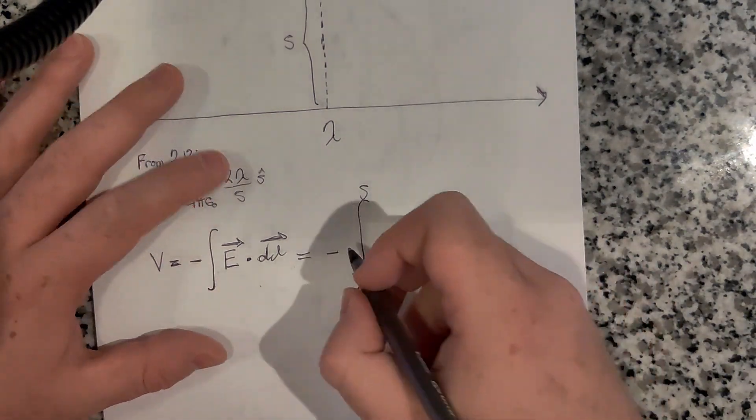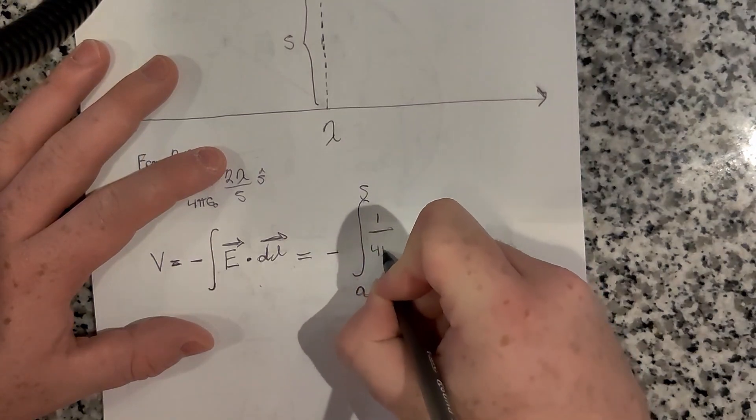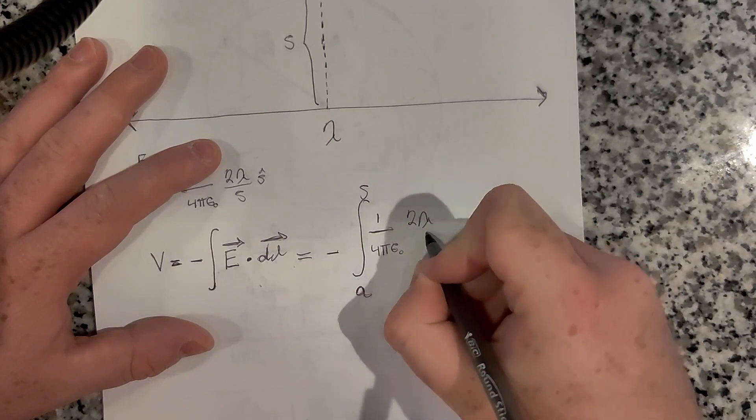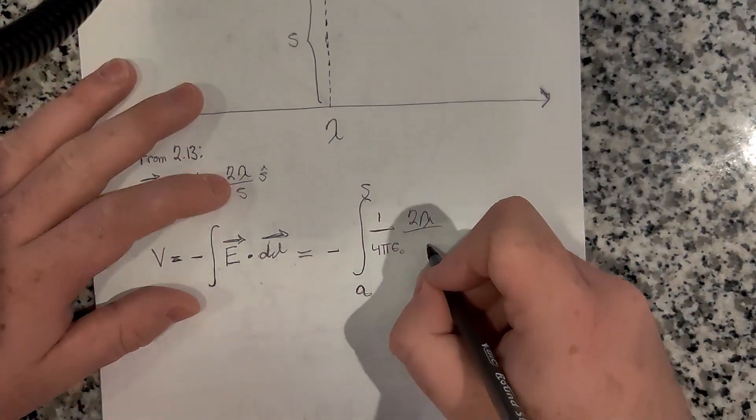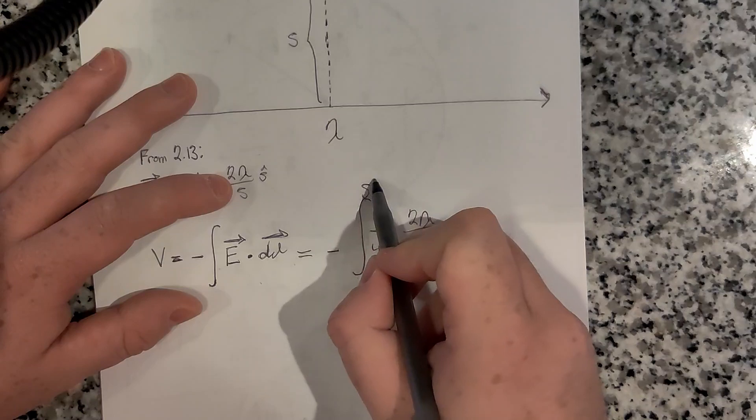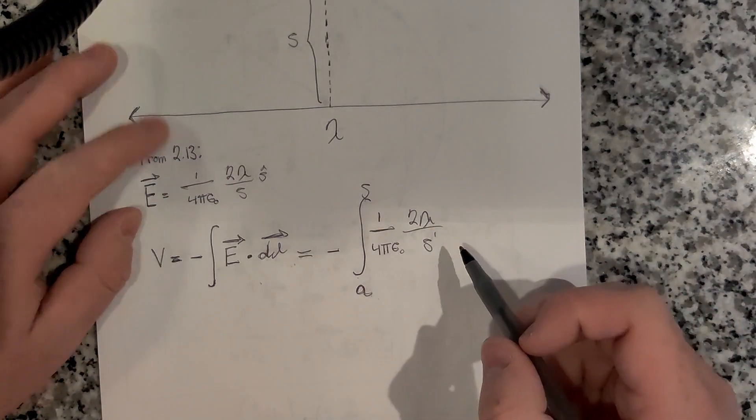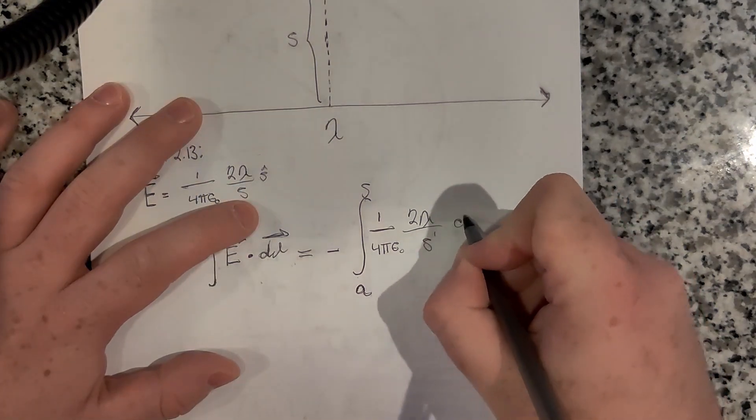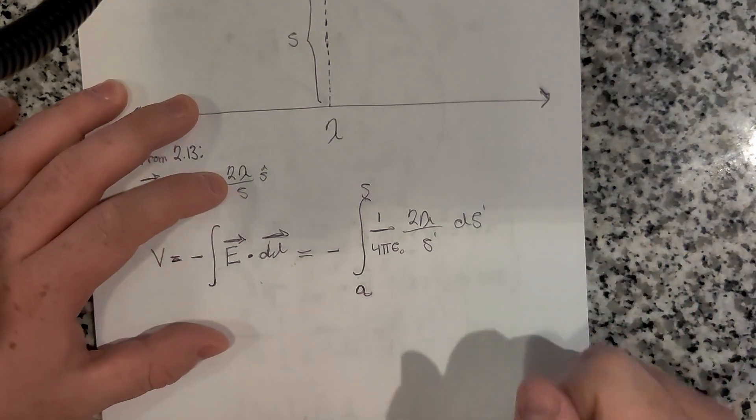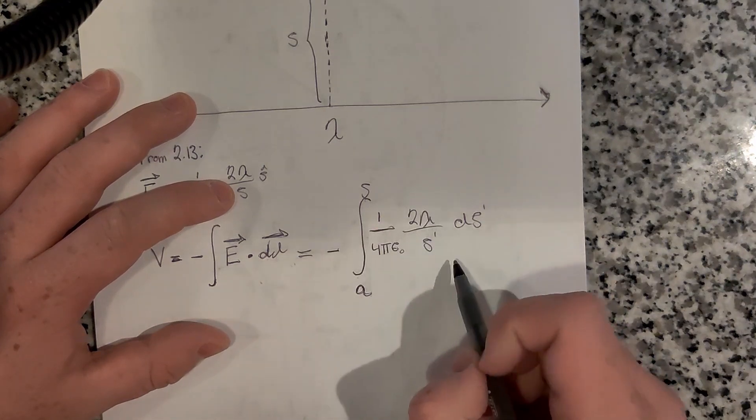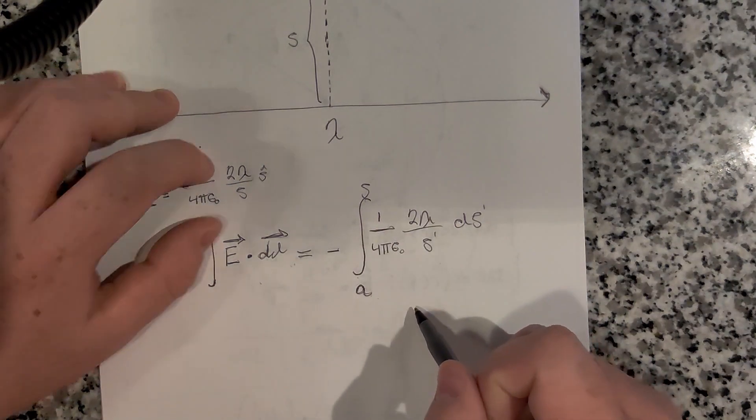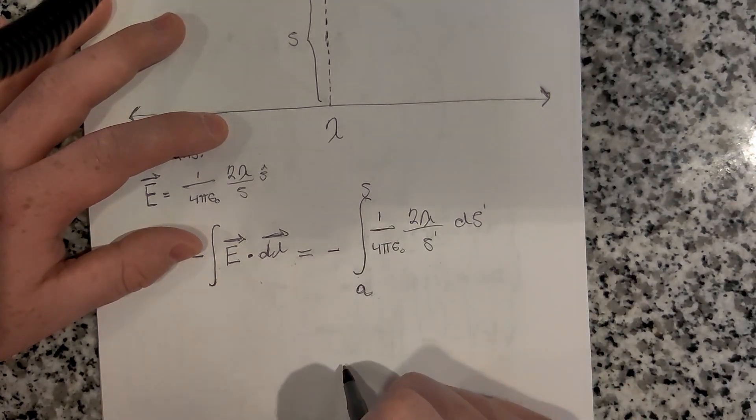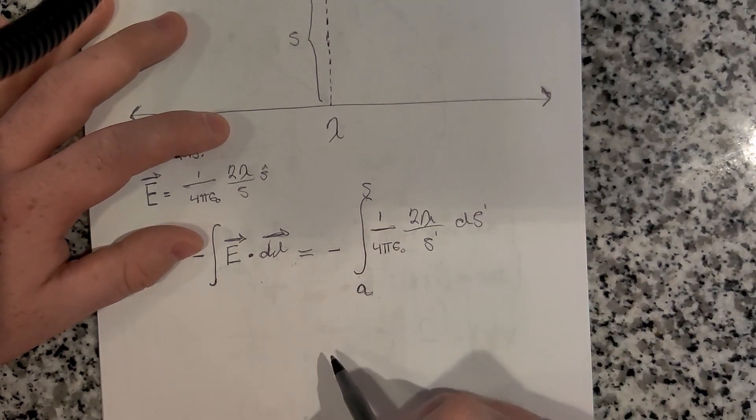Then E·dl is going to be 1 over 4πε₀ times 2λ. I'm going to change our integration variable to s prime since the bound is s. So 2λ over s prime, and dl gives us ds prime. Everything here is a constant except the 1 over s prime.